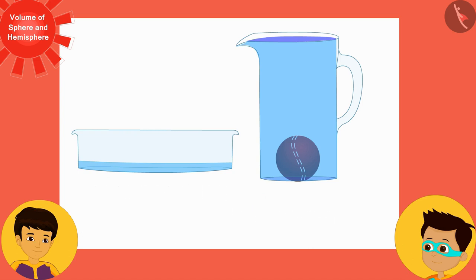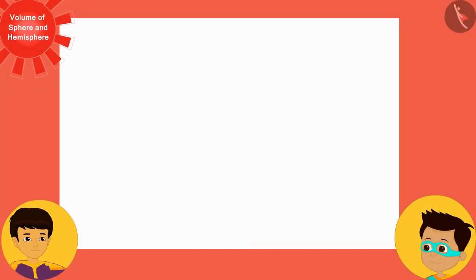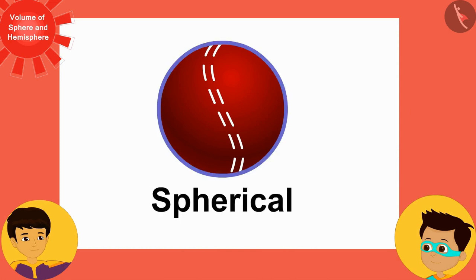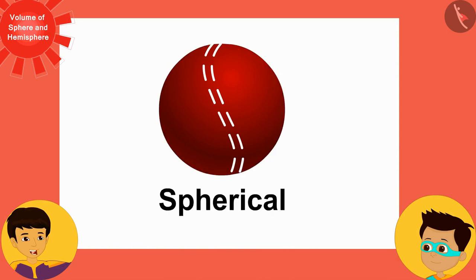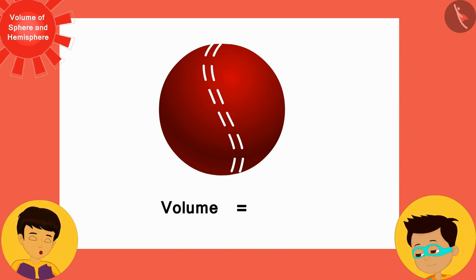And as you know, the space occupied by any object is equal to its volume. Therefore, the volume of the ball is equal to the measure of the water spilled from the vessel. And look Thomas, the ball is spherical, and you have just seen that its volume is equal to the value of the product of